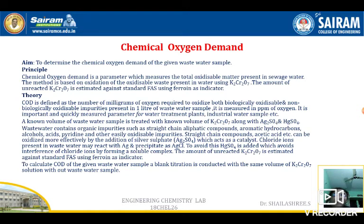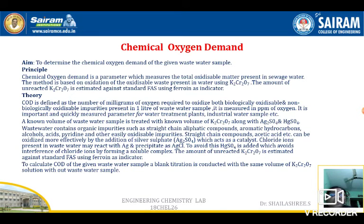When we add mercuric sulfate, the chlorides present will react with the mercury and form mercuric chloride. And to determine the total amount of COD of the given wastewater sample, a blank titration is conducted with the same volume of the dichromate solution but without using the wastewater sample.